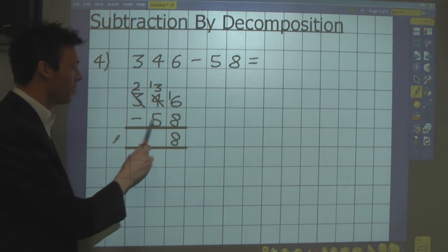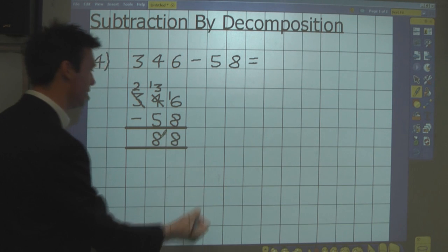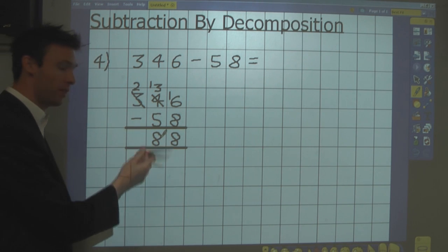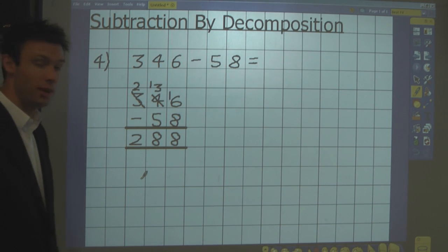13 tens take away 5 tens, with 8 tens. And finally, 200 take away nothing, is 200. And the answer is 288.